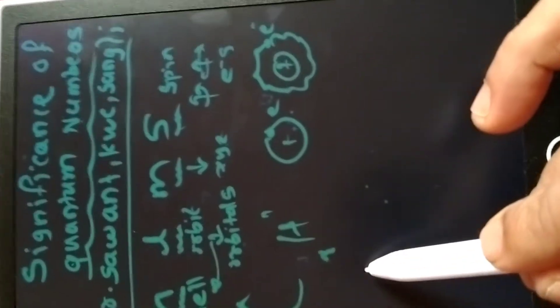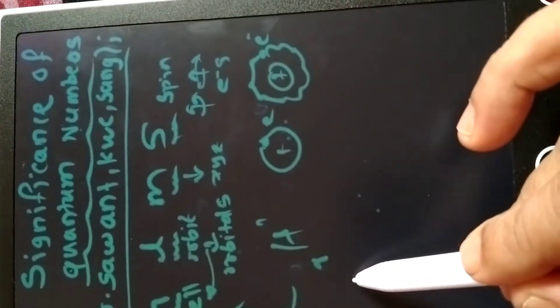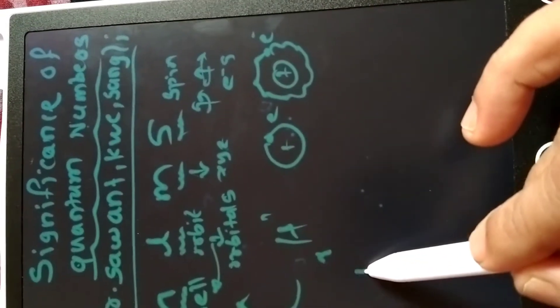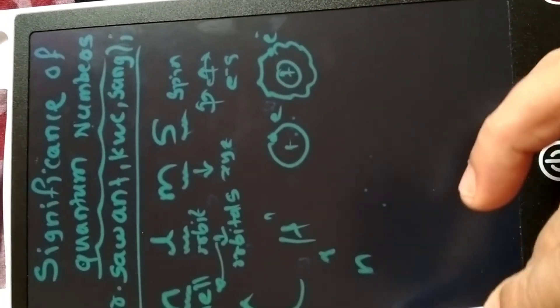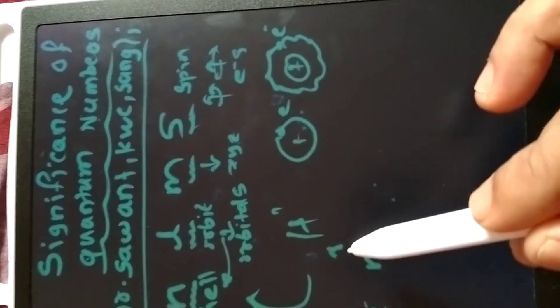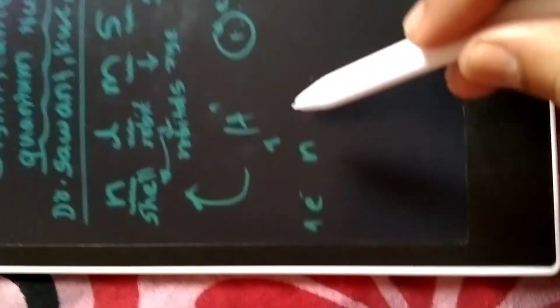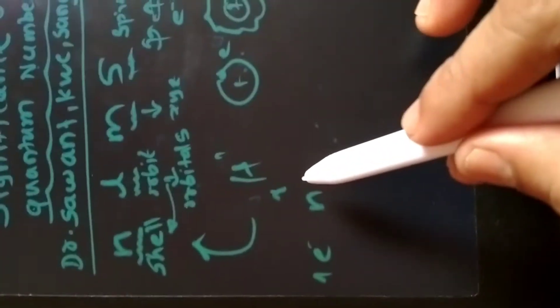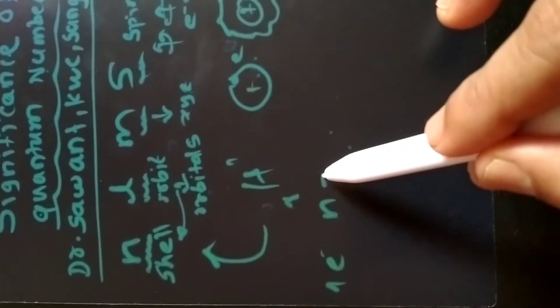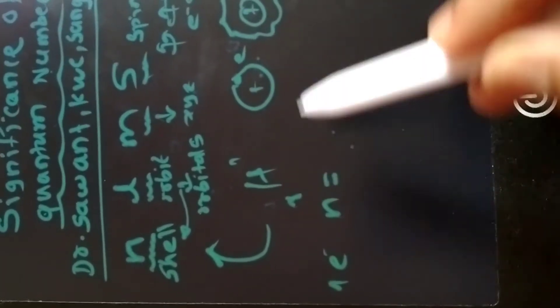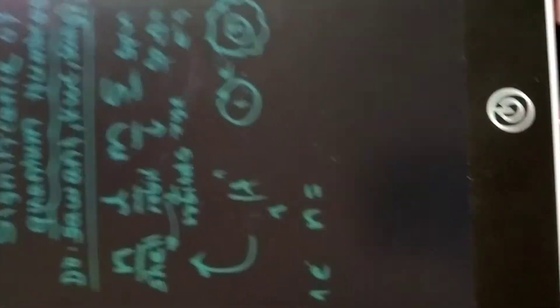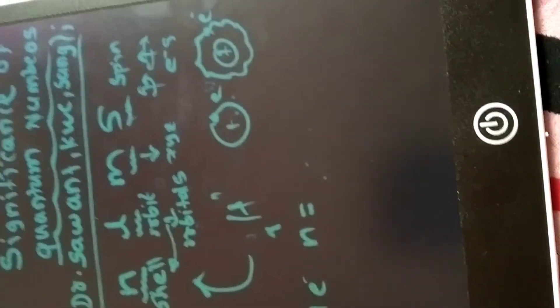For the one electron in hydrogen, the principal quantum number n has the value equal to 1, meaning it is in the first energy level.